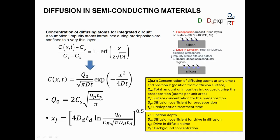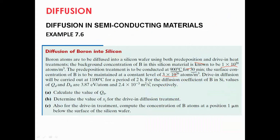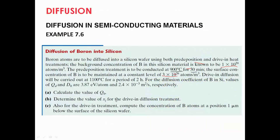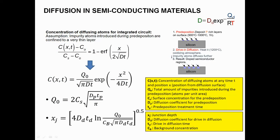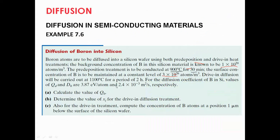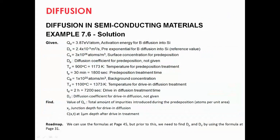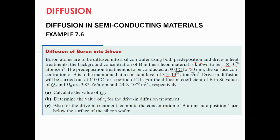In the Q₀ equation, Cs is the surface concentration, which is known. tp is the time of pre-deposition, which is 30 minutes. Dp, the pre-deposition diffusion coefficient, is not directly given — but we can find it using the Arrhenius equation since we have the values of D₀ and Qd. So the first step is to calculate Dp, then plug it in to find Q₀.